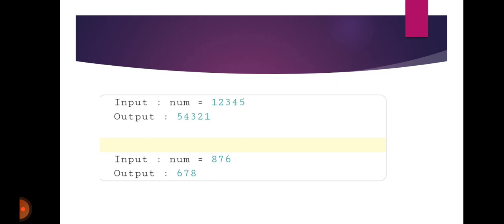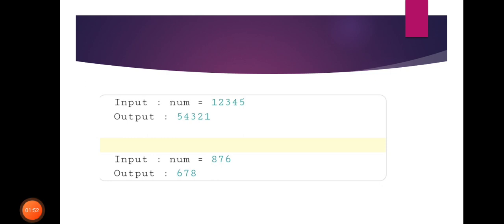Let's see an example. Suppose the input number is 1, 2, 3, 4, 5 — the output will be 5, 4, 3, 2, 1. Another example: input number is 876, so the output will be 678.